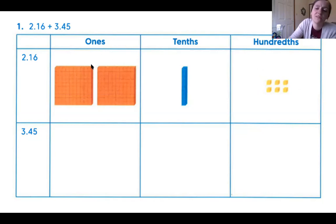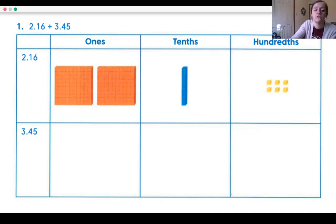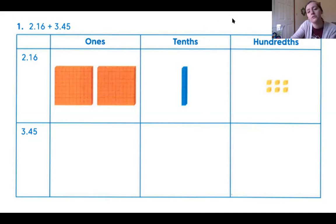You can see here they already modeled two and sixteen hundredths for us. The two is shown with these two flats. The one tenth is right here, and the six hundredths are right here. So my first step is going to be to draw out three and forty-five hundredths.